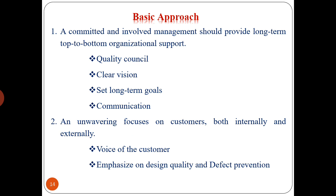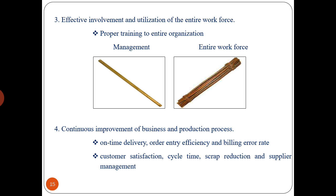The third approach — effective involvement and utilization of the entire workforce — requires proper training for the entire organization, including management and the entire workforce. The fourth approach — continuous improvement of business and production processes — covers on-time delivery, order entry efficiency, billing order rate, customer satisfaction, cycle time, scrap production, and supplier management.